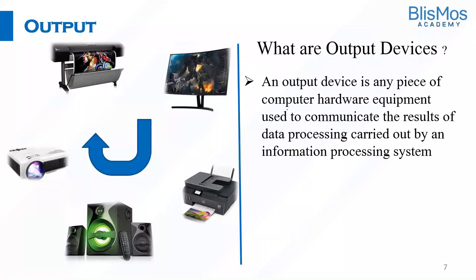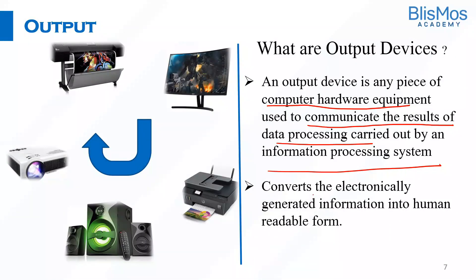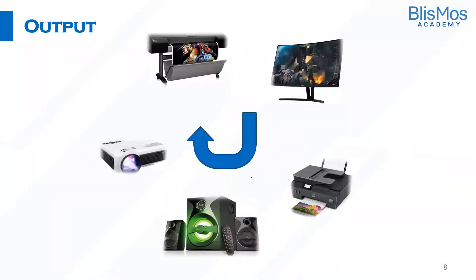How about output devices? Output devices are pieces of computer hardware equipment used to communicate the results of data processing carried out by an information processing system. So if you are using a computer and have given an input, output devices display the results to the user — they convert electronically generated information into human-readable form. Output devices include a printer, a monitor, a projector, and a music system.